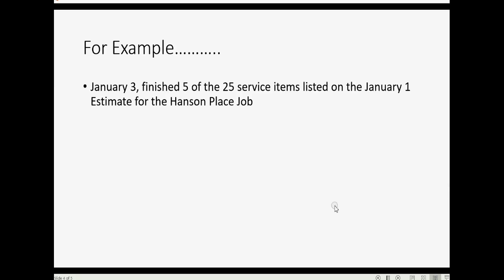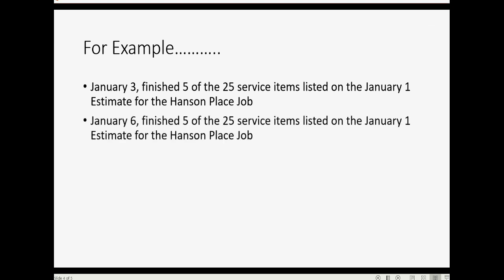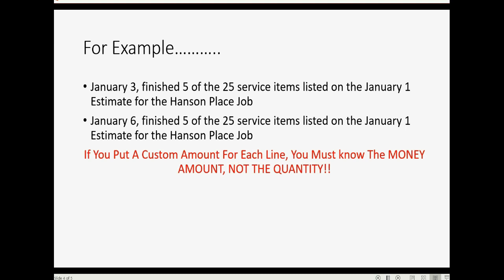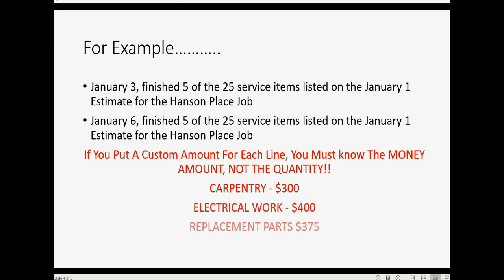Now let's do the next invoice for the same job. Let's imagine on January 6th we finished another five out of the 25 service items on the January 1st estimate for the Hansen Place job. If you put a custom amount for each line, you must know the money amount, not the quantity. In our case: Carpentry will be $300, Electrical Work $400, Replacement Parts $375, and Steam Cleaning $275.